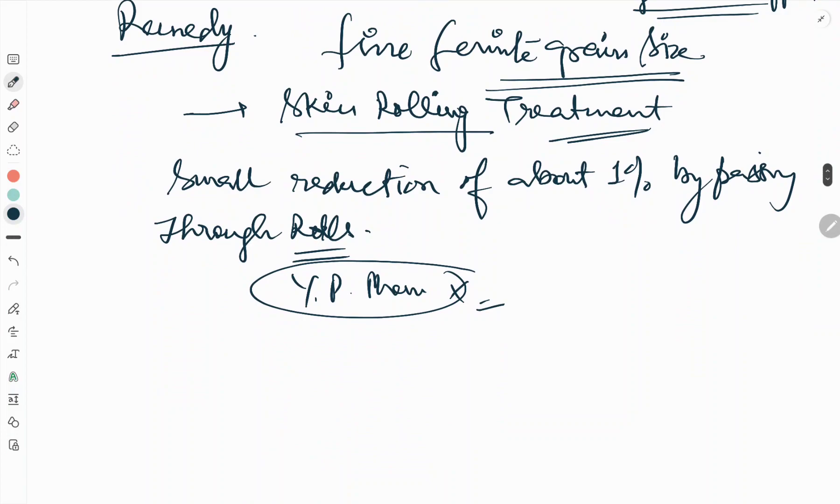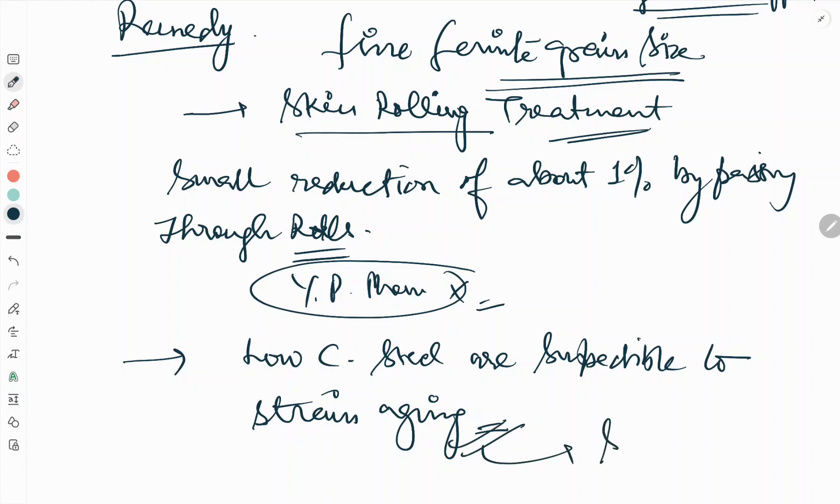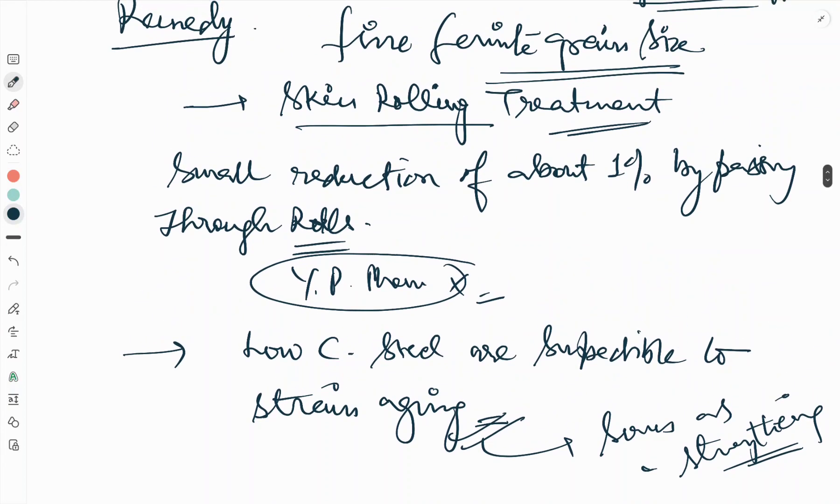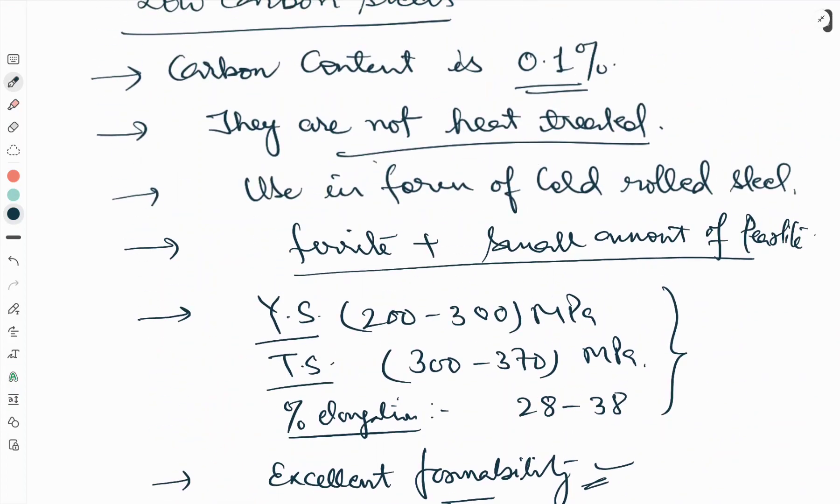Low carbon steels are susceptible to strain aging. Even though strain aging can serve as a strengthening process, it can lead to dramatic increase in the impact transition temperature and consequent improvement at ambient temperature.